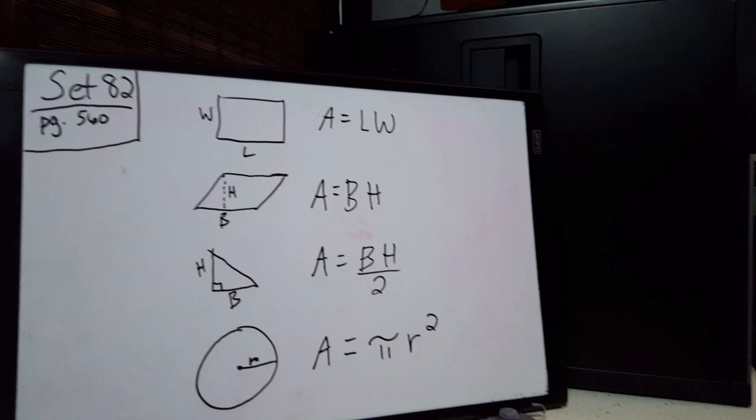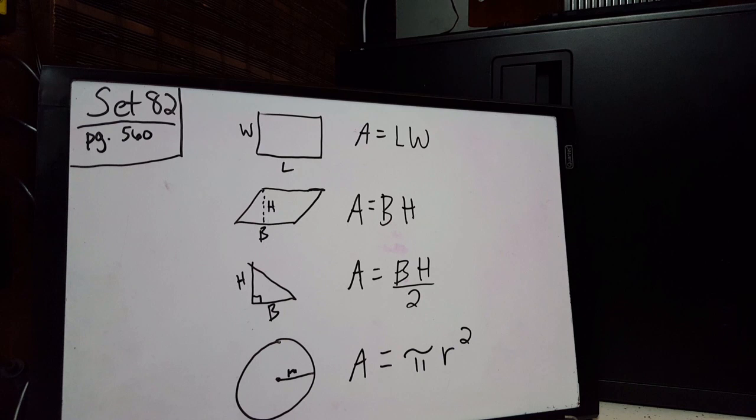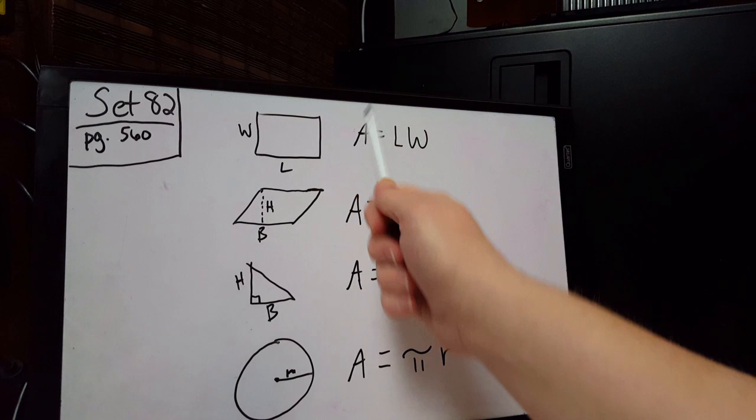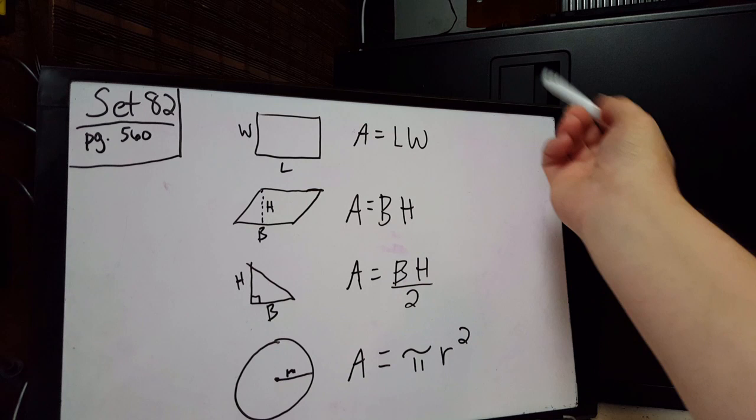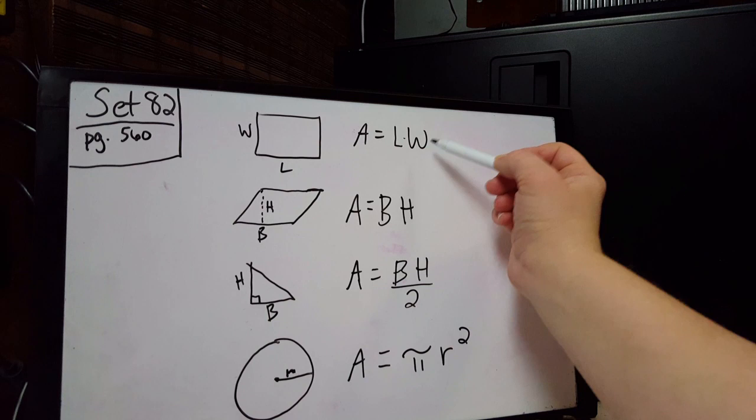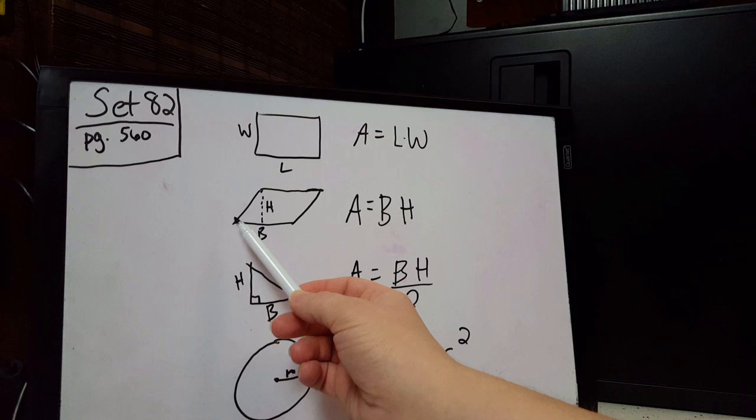At the beginning of this lesson it reviews the area of several shapes we've already learned about. First, the area of a rectangle: we multiply the length, which is the bottom part — I also call that the base — times the width, which I also call the height. When letters are next to each other it means multiply, so length times width.